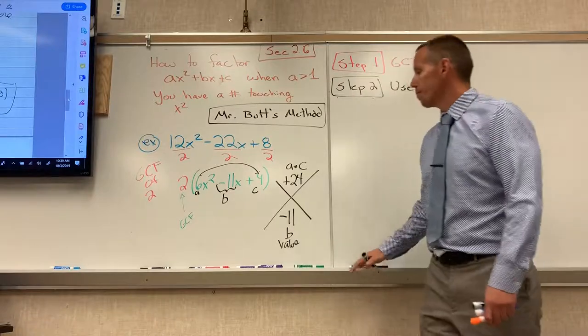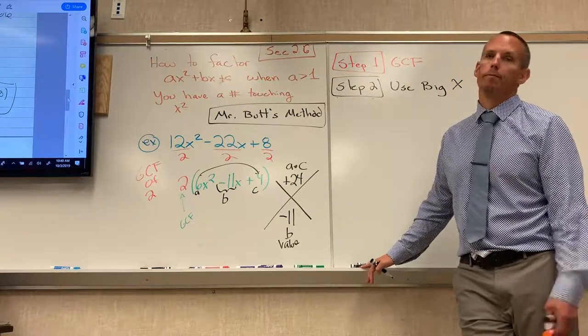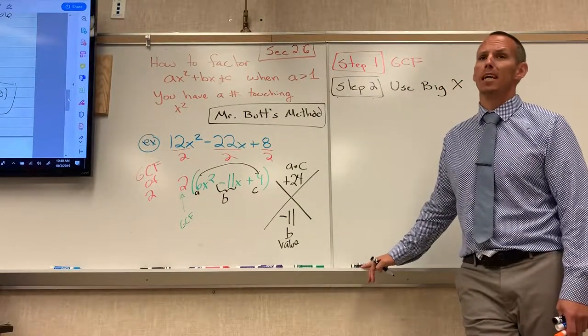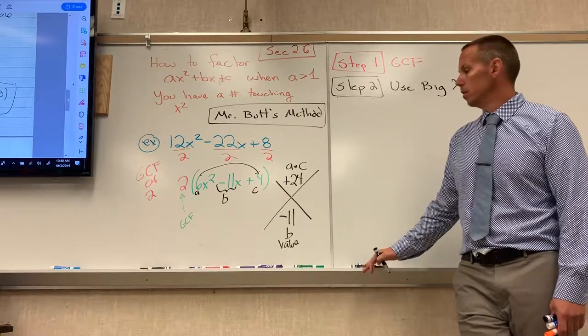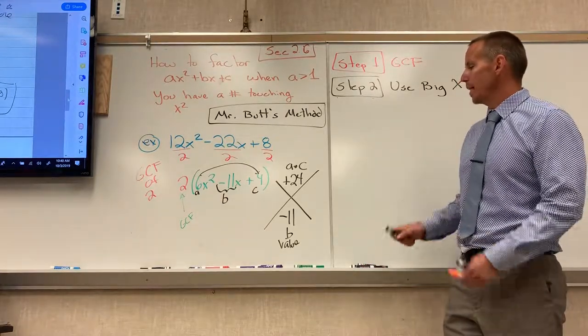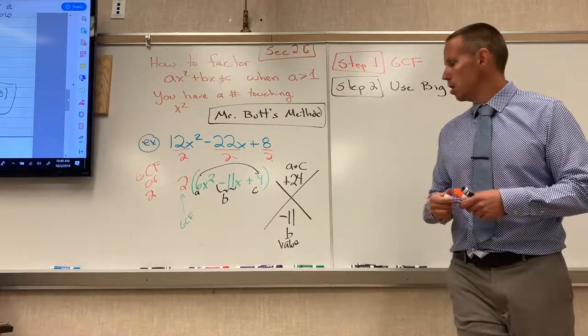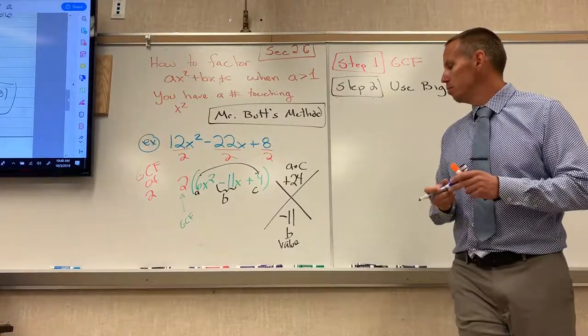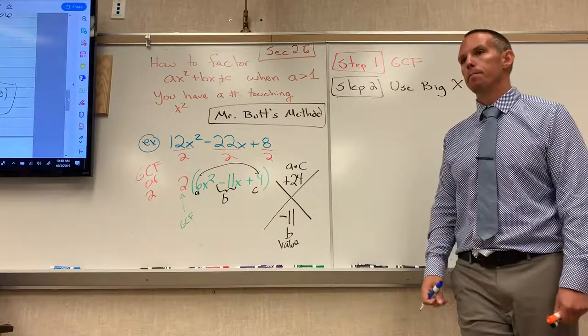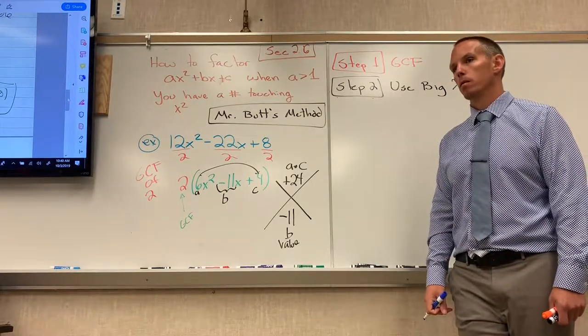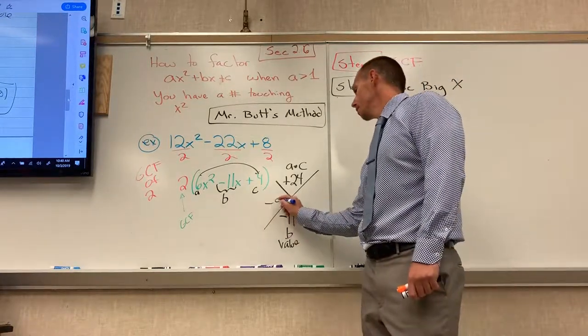So that's the trick. It's got to be A times C. It can't just be your C value. Factors that multiply to make 24 add to make negative 11. Very nice. Negative 8, negative 3.